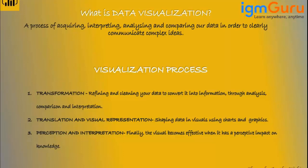To understand data visualization better, we have divided it into three parts. The first one is called Transformation. Transformation is a step which is often missed by people. It is basically the step where we bring raw data from a source — for example, an Excel file which contains unclean or raw data.